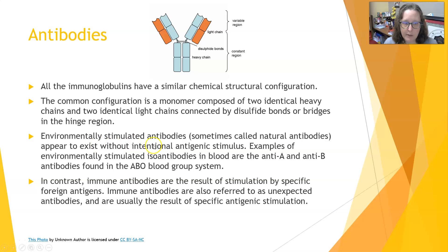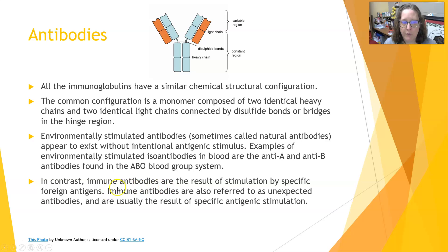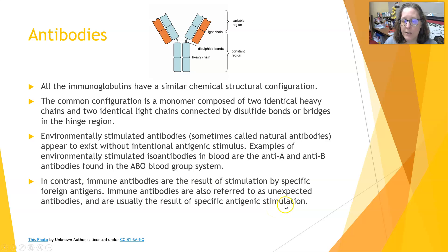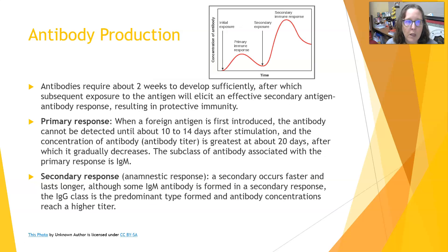Environmentally stimulated antibodies, sometimes called natural antibodies, are usually IgM. They appear to exist without intentional antigenic stimulus — examples are the anti-A and anti-B antibodies found in the ABO blood group system. In contrast, immune antibodies result from stimulation by a specific foreign antigen, are usually IgG, and are referred to as unexpected antibodies. For example, if you never had strep throat, you would not have antibodies to Streptococcus pyogenes, because you were never exposed to it.